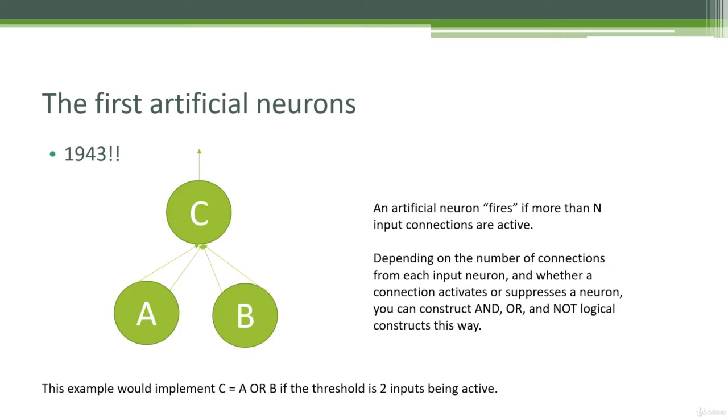So this particular diagram is implementing an OR operation. Imagine that our threshold for our neuron was that if you have two or more inputs active, you will fire off a signal. In this setup here, we have two connections to neuron A and two connections coming in from neuron B. If either of those neurons produce an input signal, that will actually cause neuron C to fire. So you can see we've created an OR relationship here where if either neuron A or neuron B feeds neuron C two input signals, that will cause neuron C to fire and produce a true output.